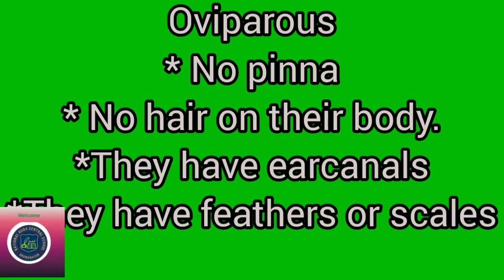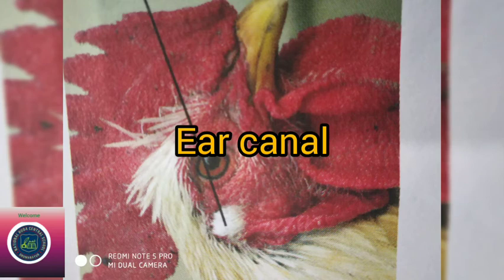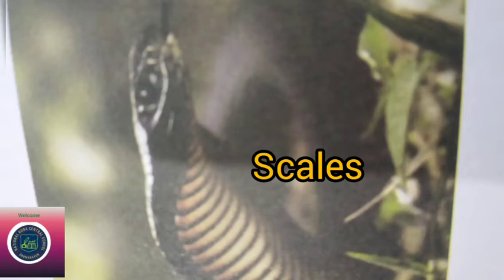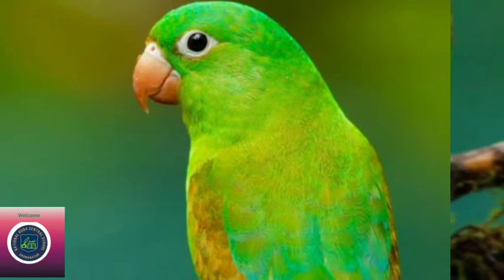Oviparous animals have no pinna. They have an ear canal or internal ears. They have scales or feathers on their body, and they have no hair on their body.